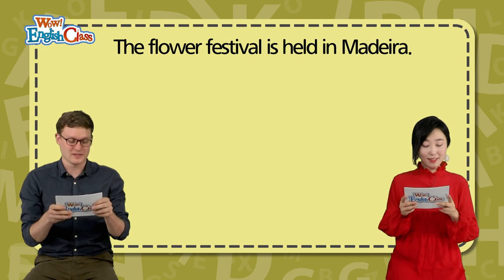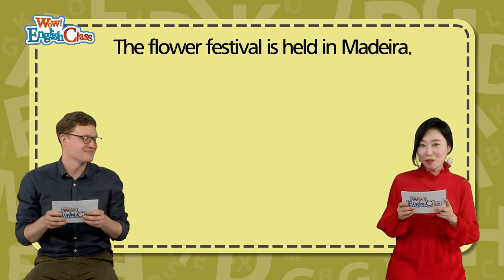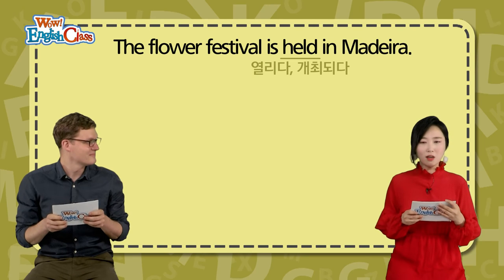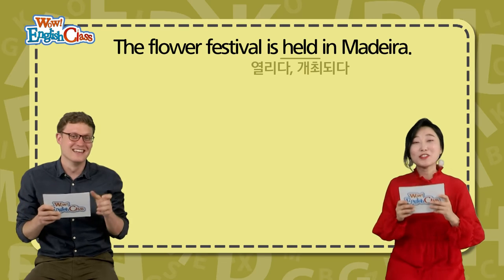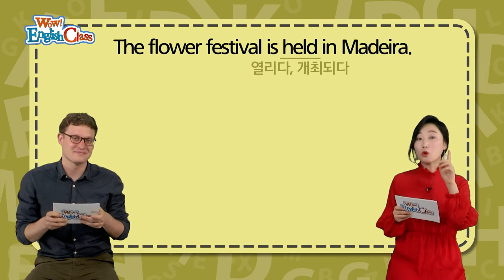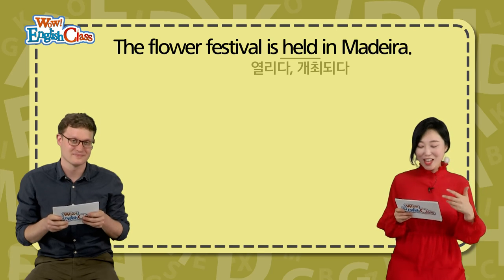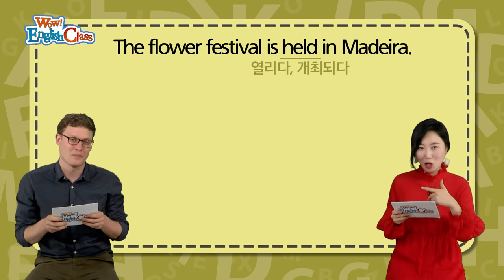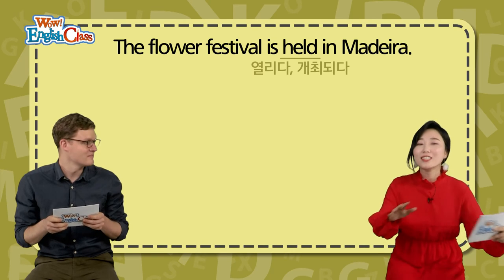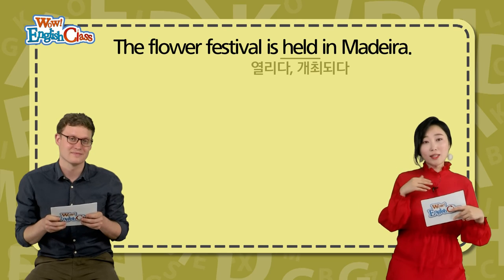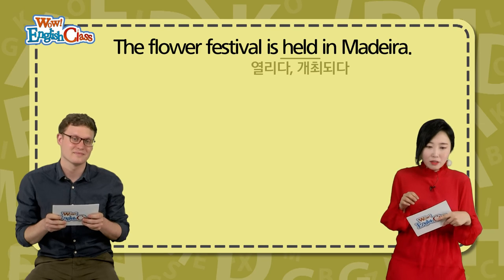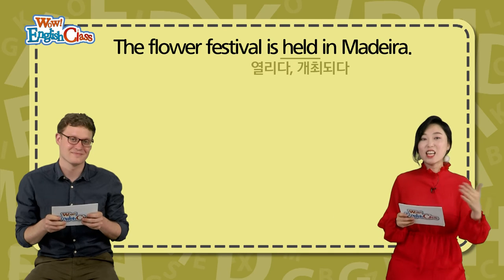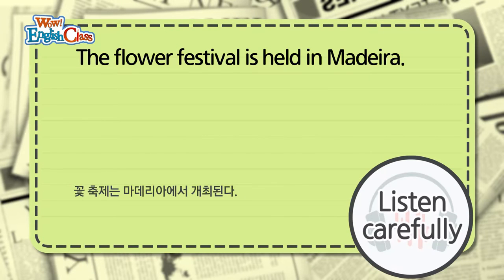Next: The Flower Festival is held in Madeira. 이 꽃축제는 Madeira에서 열립니다. Madeira는 Portugal의 한 지역이겠다라고 추측을 해보면 되겠죠. Is held 이 형태 — 수동태 많이 들어봤을 거예요. 꽃축제가 스스로 여는 게 아니라 열리잖아요. 주어가 가만히 있는데 주변에서 할 때는 be + p.p. 형태를 써야 돼요. 그래서 is held — 열린다가 된 거예요.